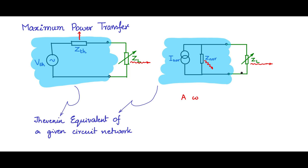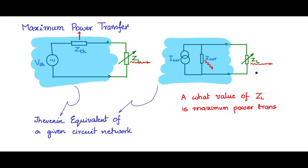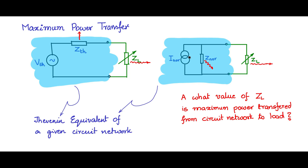Now let us find out at what value of ZL will maximum power be transferred to the ZL load side from the circuit network. We need to know how much power from the circuit network — sources and fixed circuit parameters combined — transfers to the load side ZL.